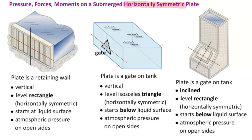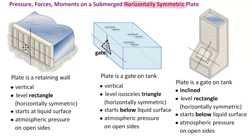So this is the kind of situation we're going to be looking at. The most important part is that the shape itself — here a rectangle, here an isosceles triangle, here again a rectangle — is horizontally symmetric. So at every point with respect to the horizon, we have the same amount of plate on the left side as on the right side.